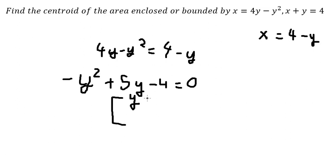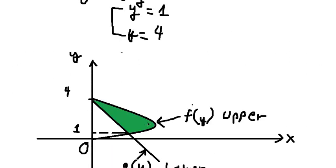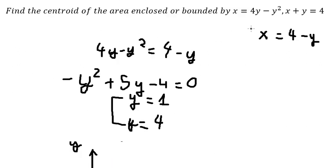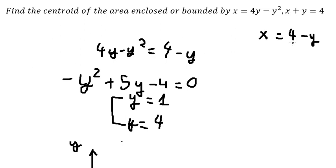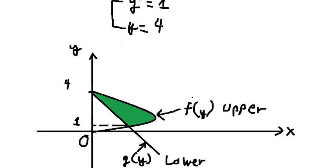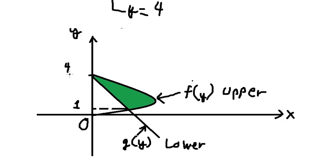Now we need to find the solution of this one, and we have y equals to 1 and y equals to 4. Now we need to graph this. This is the graph of these equations. Here we have x equals to 4 minus y, so we have two intersections at 4 and 1.